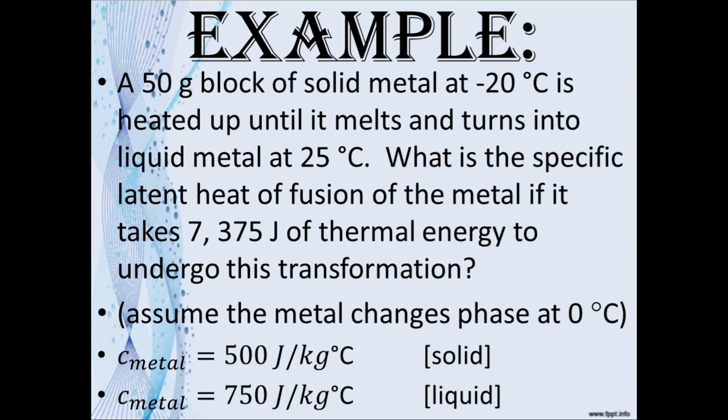A 50 gram block of solid metal at negative 20 degrees Celsius is heated up until it melts and turns into liquid metal at 25 degrees Celsius. What is the specific latent heat of fusion of the metal if it takes 7,375 joules of thermal energy to undergo this transformation?